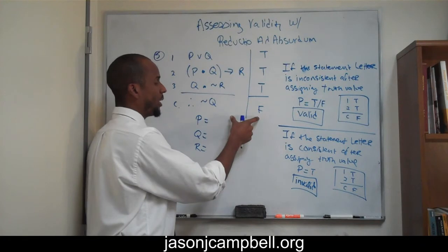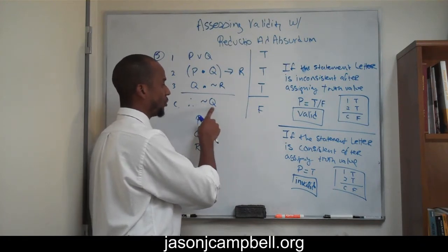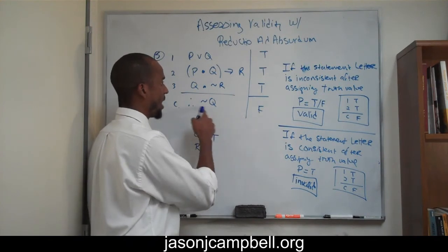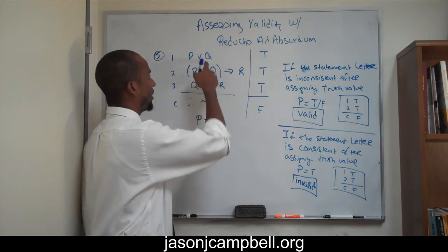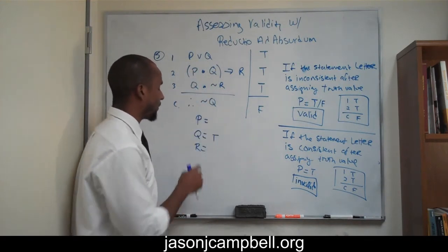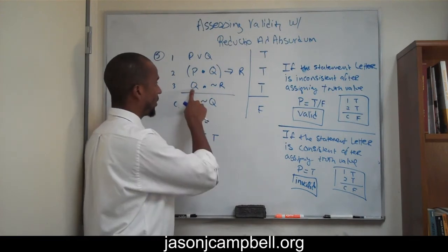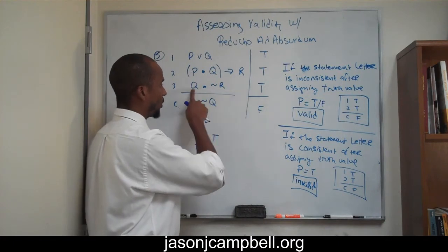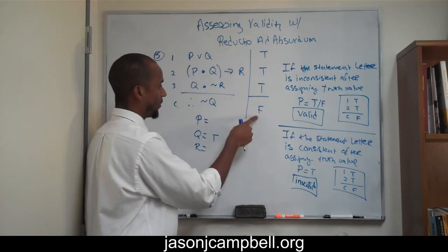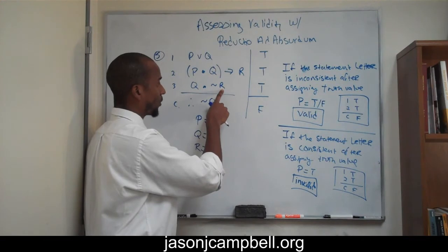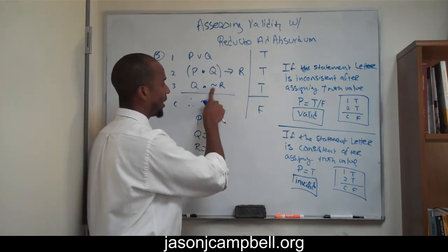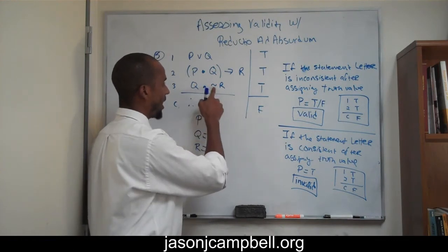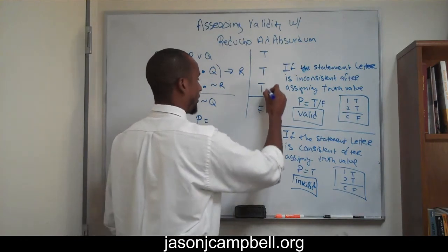We know immediately that the conclusion is a false claim we need to get. Not Q has to be false, meaning Q has to be true. Insofar as Q is true, and we look at premise three — Q and not R — we recognize that this has to be true. If Q is true and not R must be true, then R has to be false. Not false is true, and true and true is true. So far we've satisfied premise three.